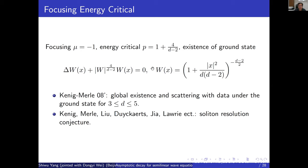This explicit stationary solution is exactly the one achieving the best constant for the Sobolev inequality. Using the Lorentz transformation, one can obtain a family of ground state solutions. In the striking result by Kenig and Merle in 2008, they proved that for data below this ground state — meaning energy below the ground state — the solution exists globally and scatters in the energy space.